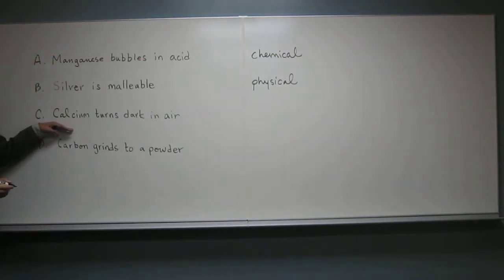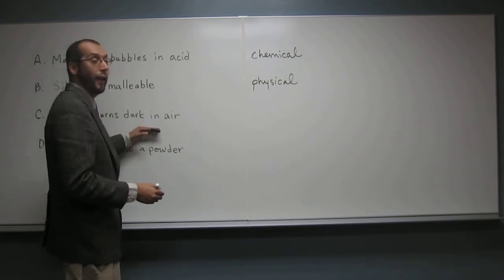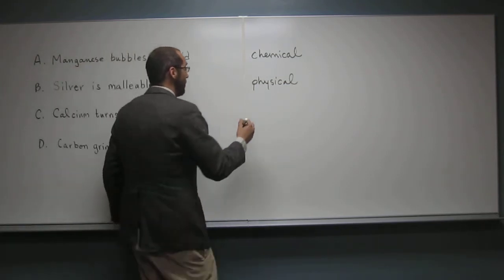Okay, what about the next one? Calcium turns dark in air. That's a chemical. Why do you say that? Because it's a change in color. It's a permanent change in color. Okay, so whenever you see that, that's always going to be a chemical change, okay?